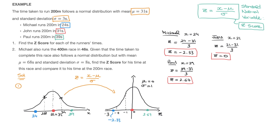We now know how to calculate a z-score as well as what it means, so let's move on to question two. In question two, we're told Michael also runs the 400 meter race in 46 seconds. Given that this race also follows a normal distribution with mean mu equals 68 seconds and standard deviation sigma equals 8 seconds, we need to find the z-score for his time and compare it to his 200 meter race time. As always, I'll start by illustrating the information on a bell curve.